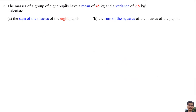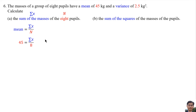Question 6: the masses of a group of 8 pupils have a mean of 45 kg and a variance of 2.5 kg squared. For part A, calculate the sum of the masses of the 8 pupils. The sum of masses means Σx, and n equals 8. Using the formula mean equals Σx divided by n, we get 45 equals Σx divided by 8, so Σx equals 45 multiplied by 8, which equals 360.